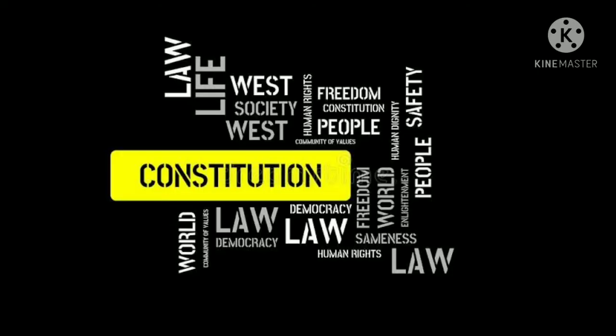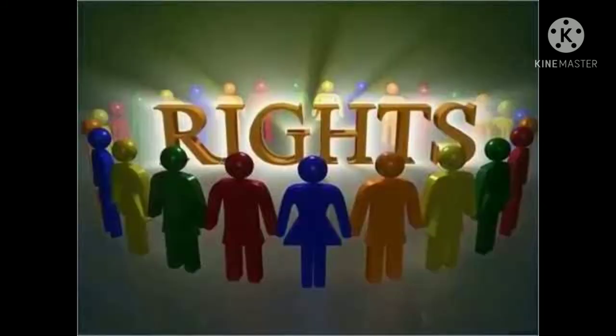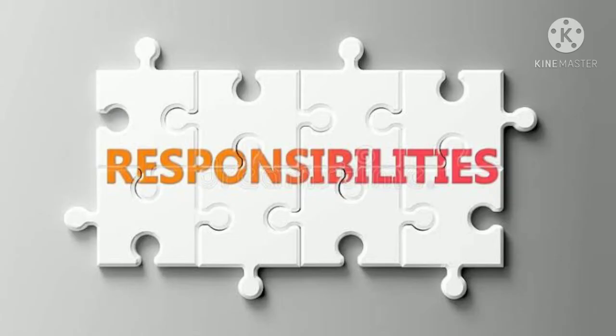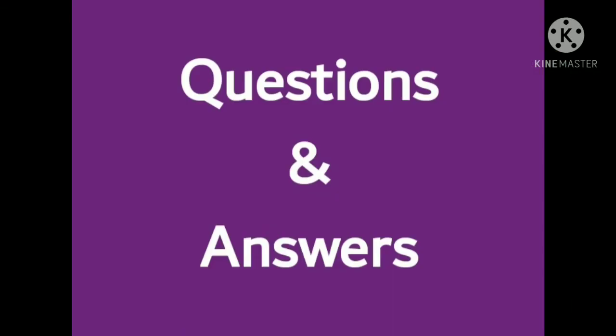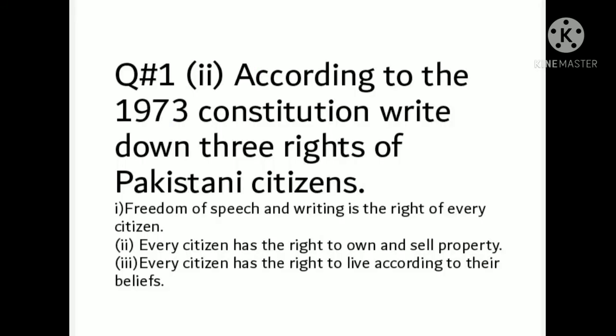I hope you understood what a constitution is, its importance, and the rights and responsibilities of citizens. Now let's move to the question and answers. According to the 1973 Constitution, three rights of Pakistani citizens are: freedom of speech and writing is the right of every citizen, every citizen has the right to own and sell property, and every citizen has the right to live according to their beliefs.